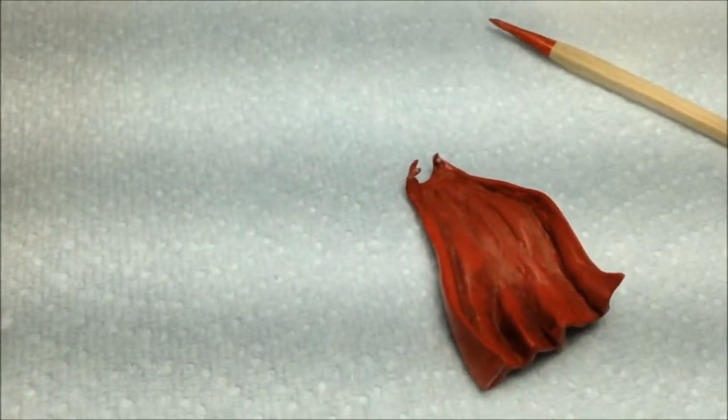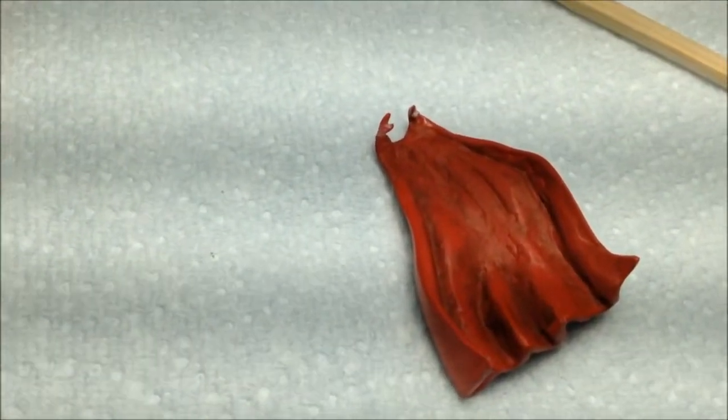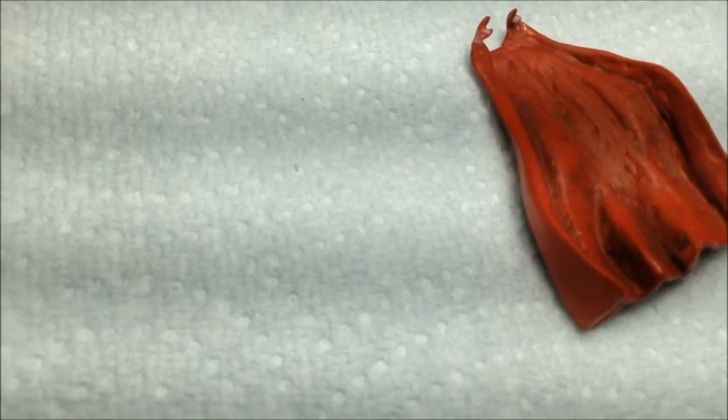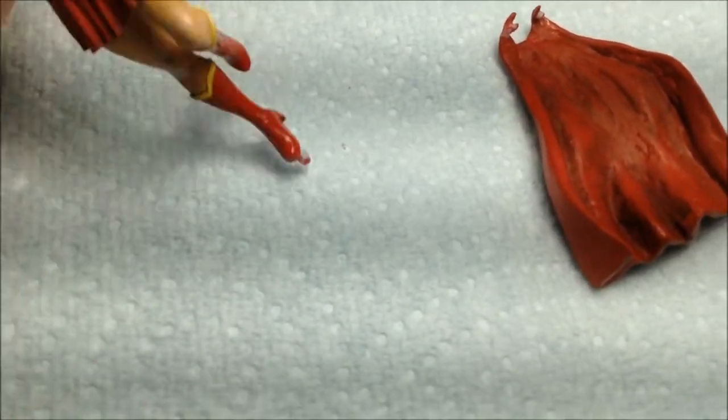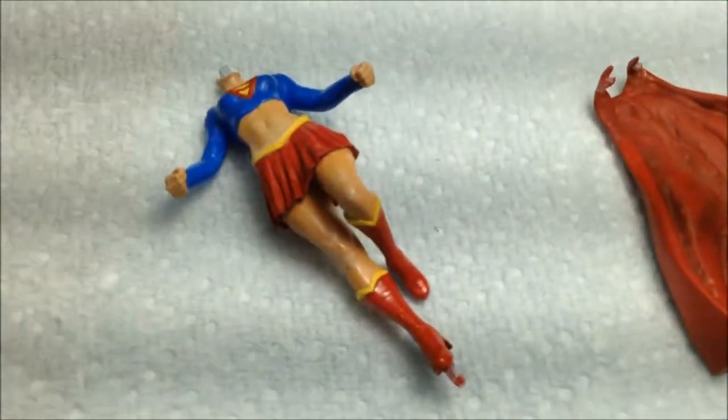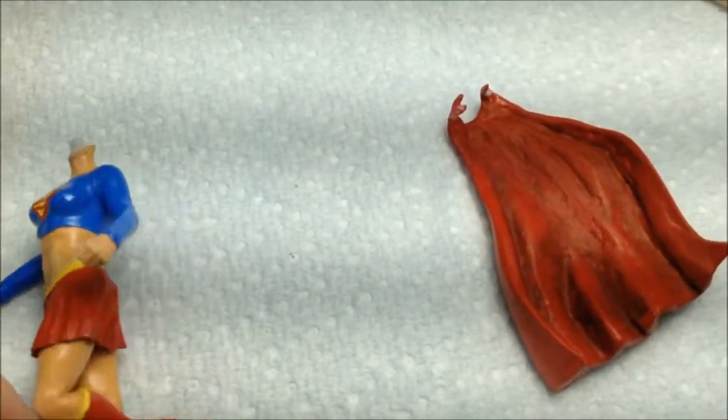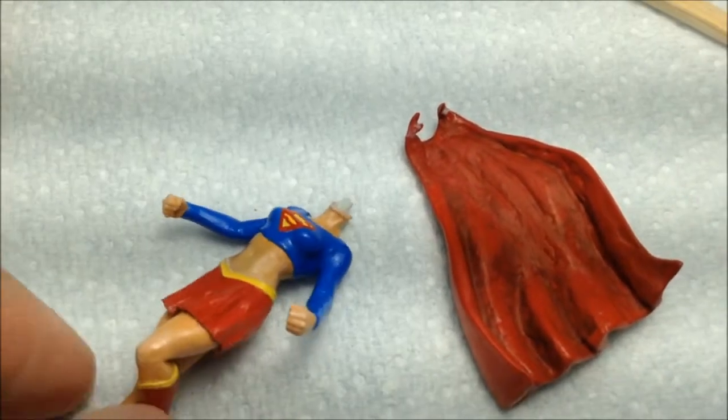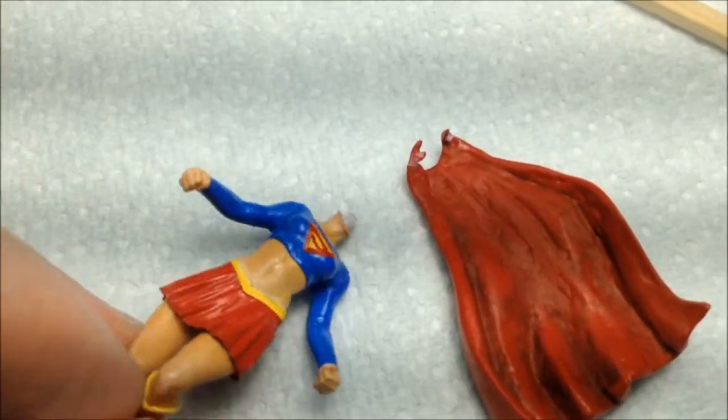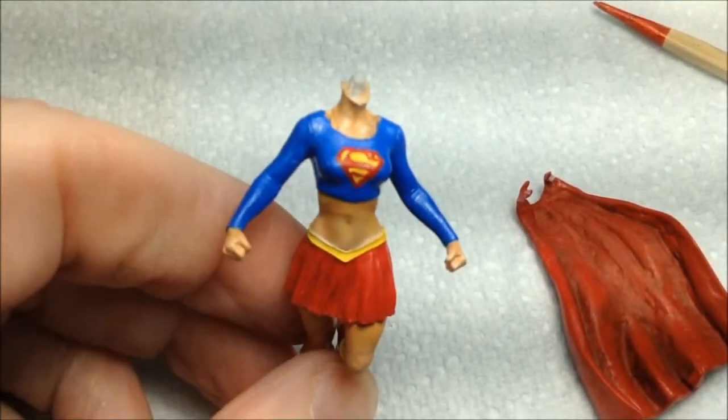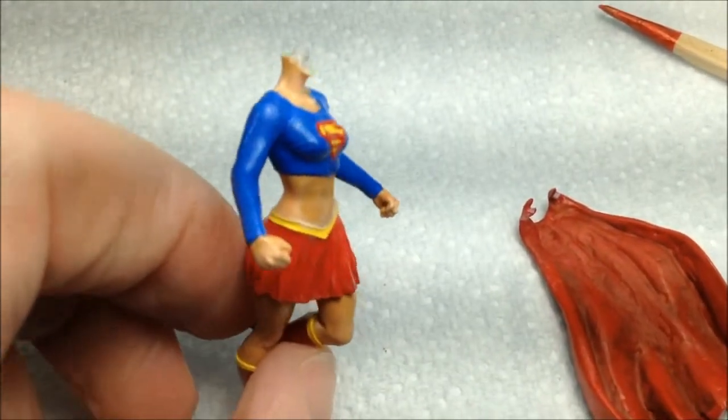I've got the arms and legs put on, so that's coming along pretty well. I've got her sealed with LA Totally Awesome Mop and Shine, just to knock down some of the glossiness on her skin and her clothes. I'll probably put another coat on once she's completed.